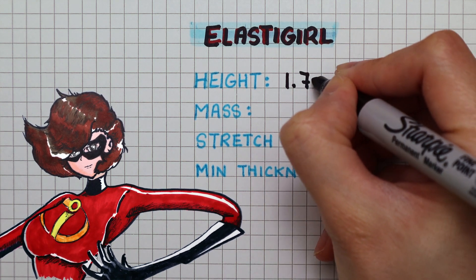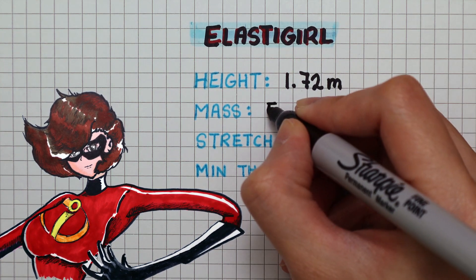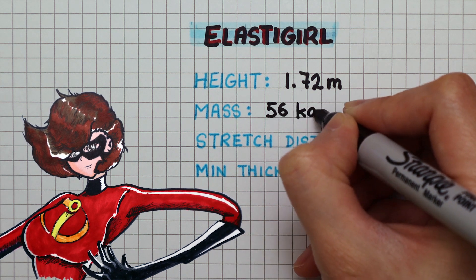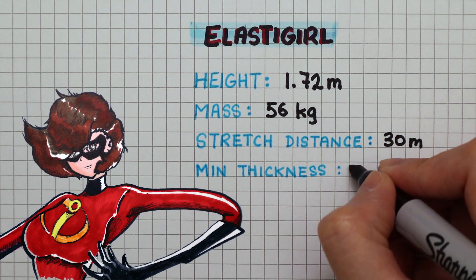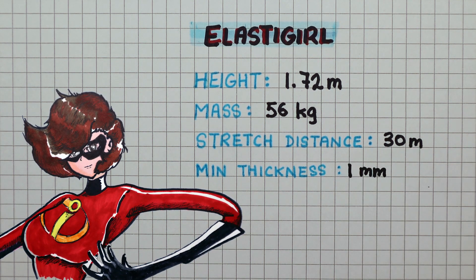I know that Elastigirl is 1.72 meters tall and her mass is 56 kilograms. She can stretch over a distance of 30 meters and be stretched to a thickness of 1 millimeter before she snaps.